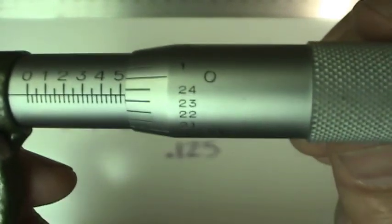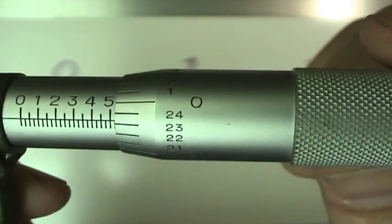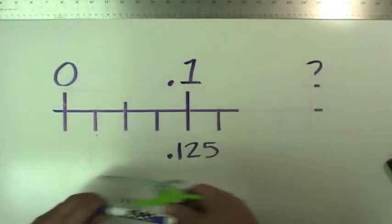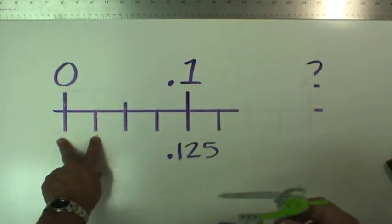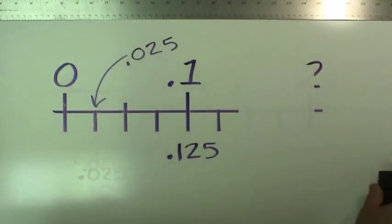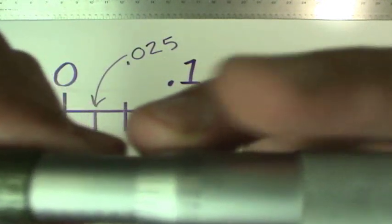So once around this is 25 somethings. If we remember that each of these is 0.025, then that other scale, the scale on the thimble, it's reading thousandths of an inch.